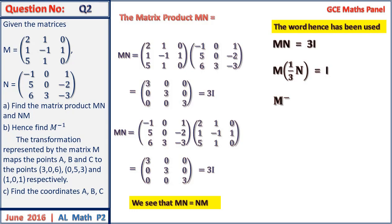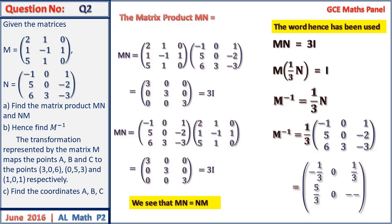And we can simplify to have one over three times all the entries in matrix N. And this is what it results in: minus one third, zero, one third, five on three, zero, minus two on three, two, one, minus one.